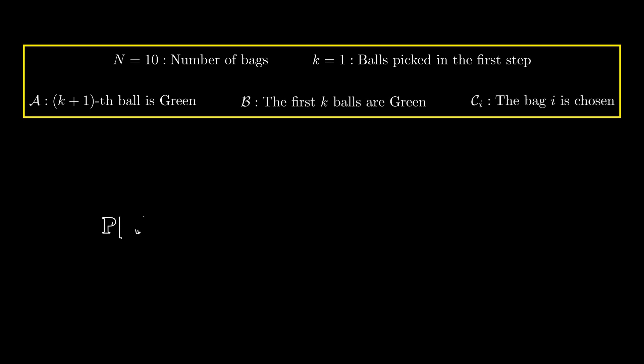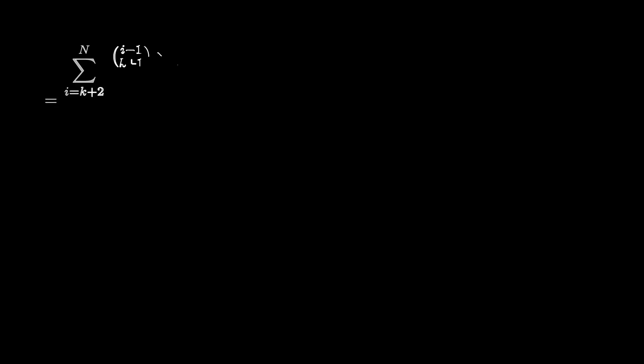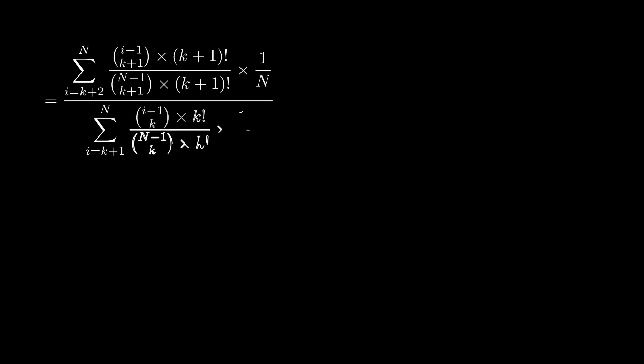We need to calculate the probability of A given B, which can be written as probability of A and B over the probability of B. And then, using the law of total probability, we can expand this to make it conditional on C_i. Knowing about the bag, it's not hard to see that this can be calculated like this. There are a lot of common terms to be cancelled.